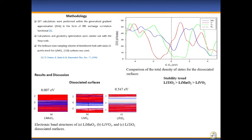The DFT calculations were performed within the generalized gradient approximation in the form of PBE exchange correlation functional. Calculations and geometry optimization were carried out with VASP. The Brillouin zone sampling scheme of Monkhorst-Pack with 6x6x1 k-points mesh for Li-MO2-110 surfaces was used.